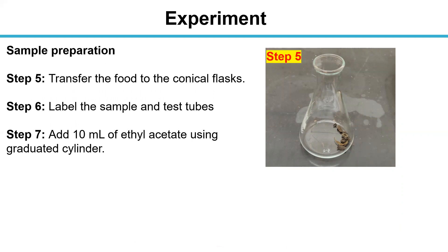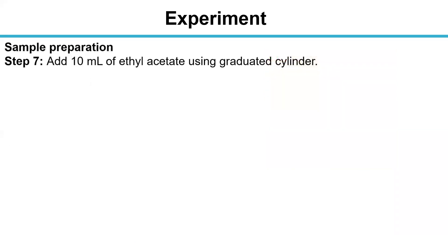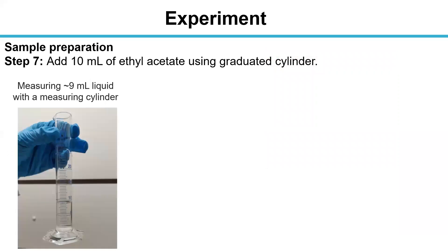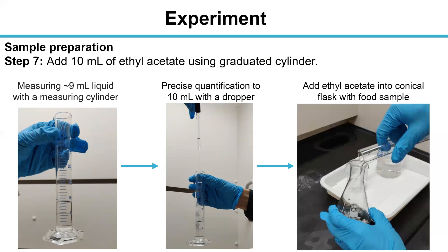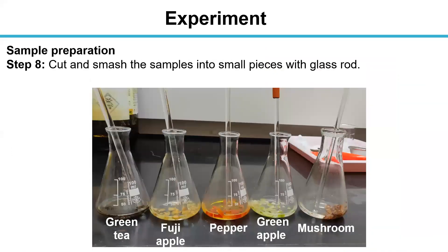In step 7, we add 10 ml of ethyl acetate using a measuring cylinder. We measure liquid with the help of a measuring cylinder and a dropper, then add ethyl acetate into the conical flask with the food sample. Then we cut and mash the sample into small pieces with scissors.